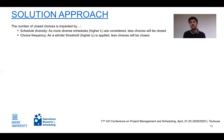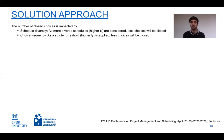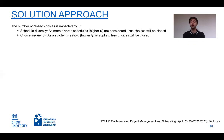The number of closed choices is impacted by both criteria. As we consider more diverse schedules — i.e., a larger subset — the probability of closing a choice decreases because more different alternatives appear. Similarly, as we use a stricter threshold T2 to label alternatives as preferred, the lower the probability that any alternative can be closed.